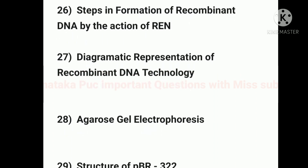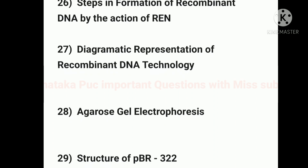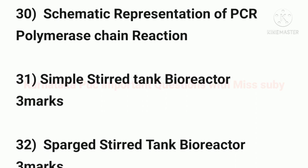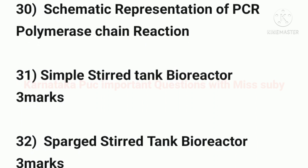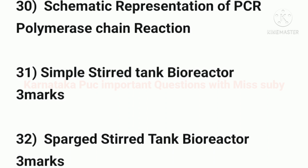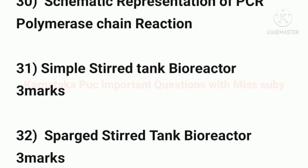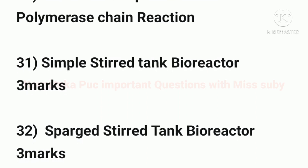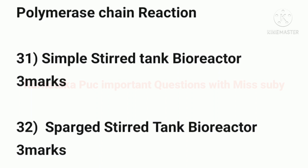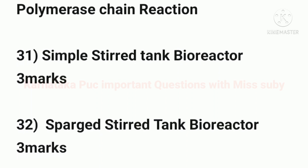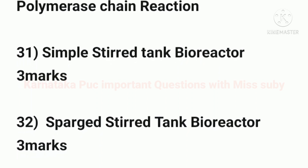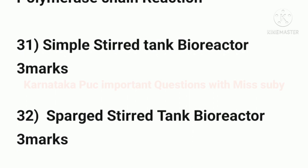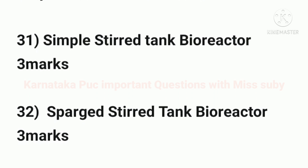Next, diagram of agarose gel electrophoresis — carries 3 marks. Next, structure of pBR322. Next, schematic representation of PCR (polymerase chain reaction). Next, simple stirred tank bioreactor — carries 3 marks. Next, sparged stirred tank bioreactor — also carries 3 marks.